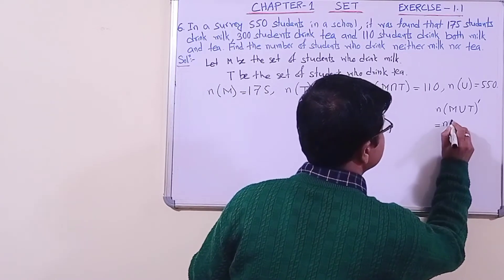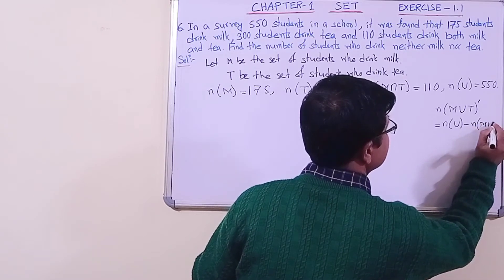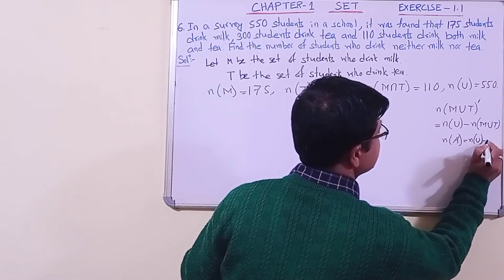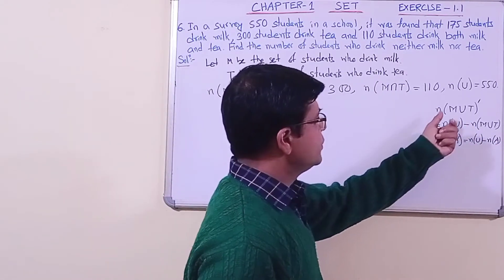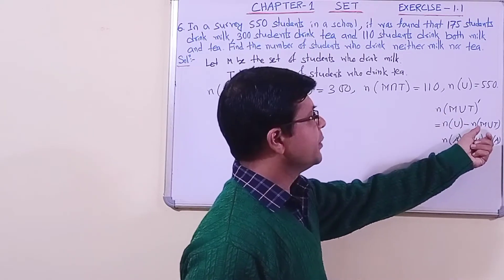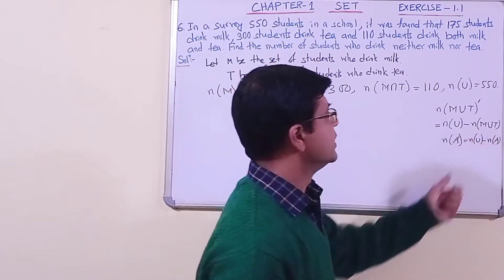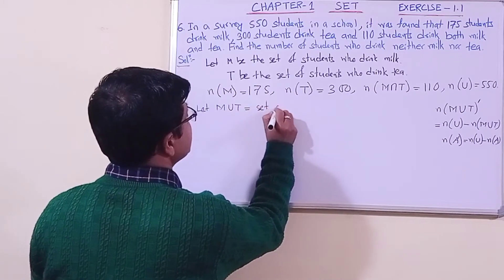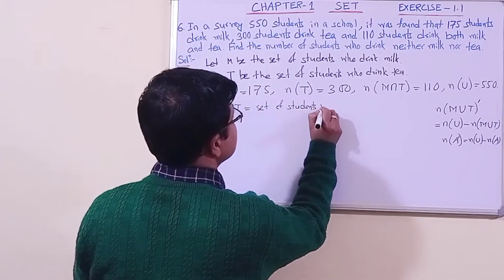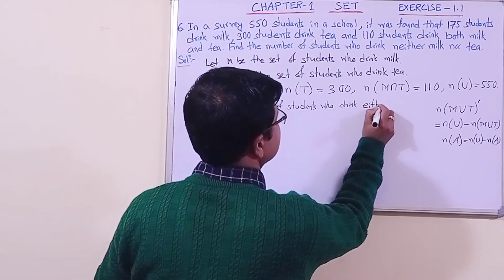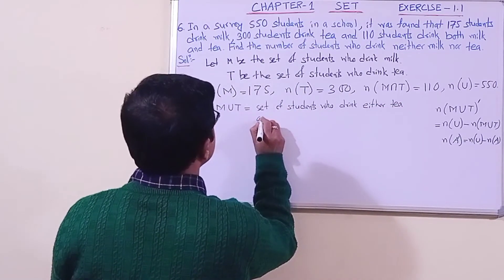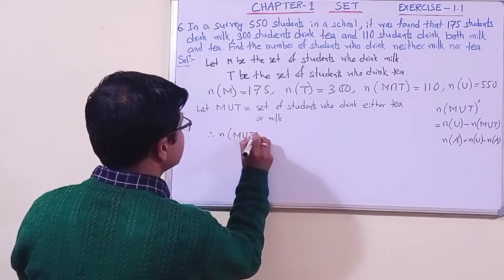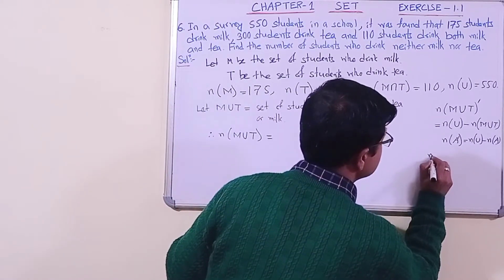This is n(U) minus n(M∪T), because we know that n(A') = n(U) minus n(A). So to find this, we first have to find n(M∪T) — the set of students who drink either milk or tea. Let M∪T represent the set of students who drink either tea or milk. So let us find n(M∪T).